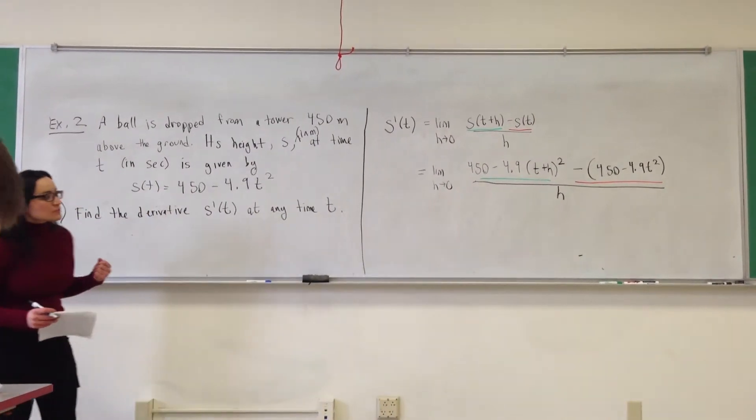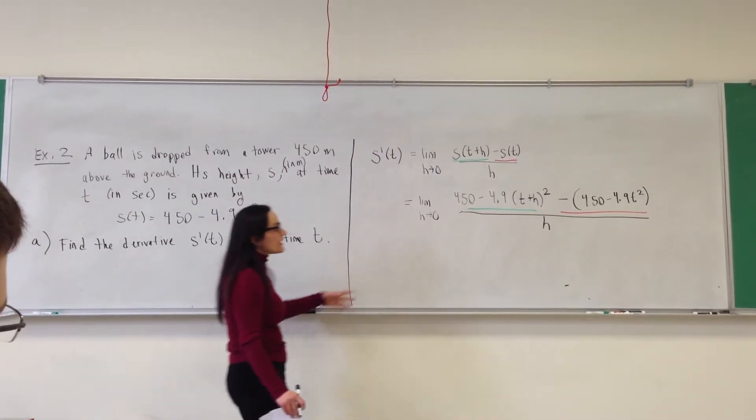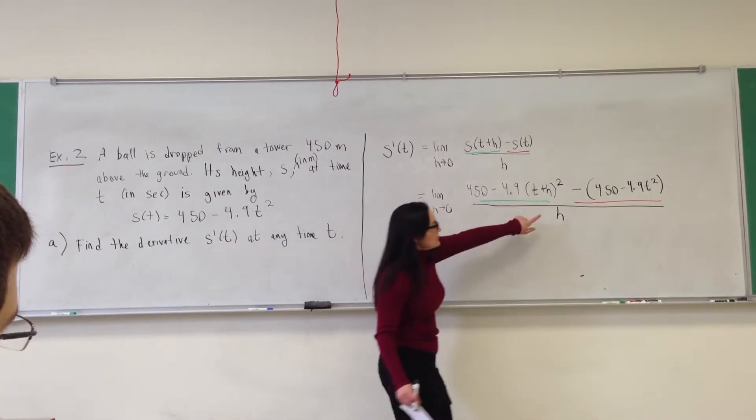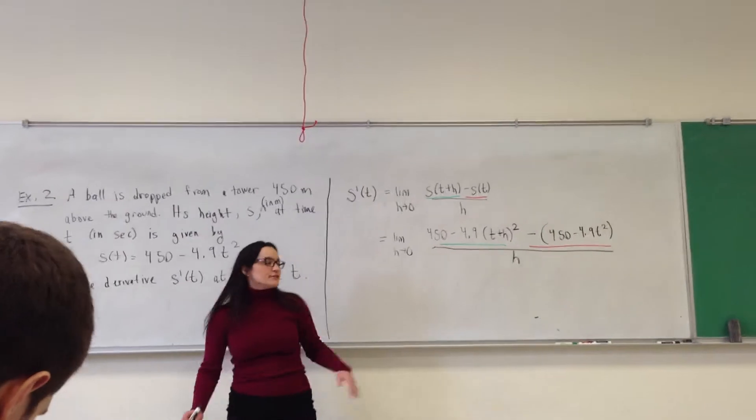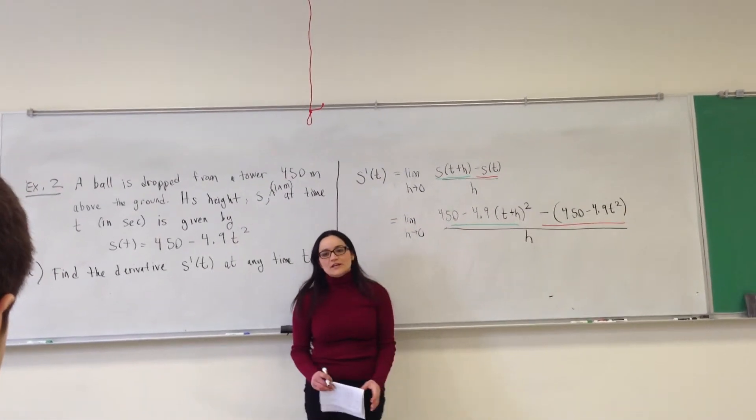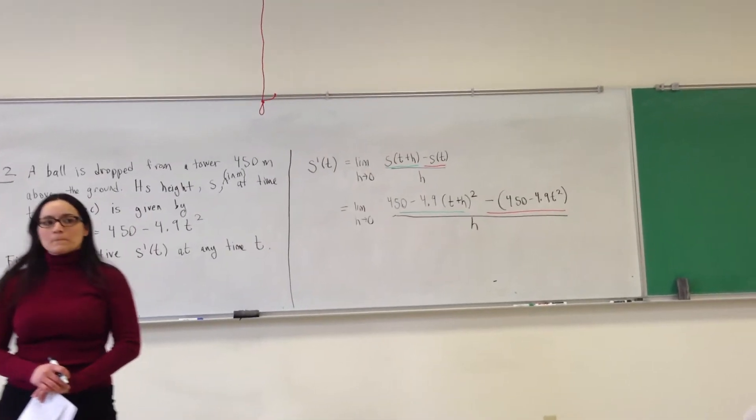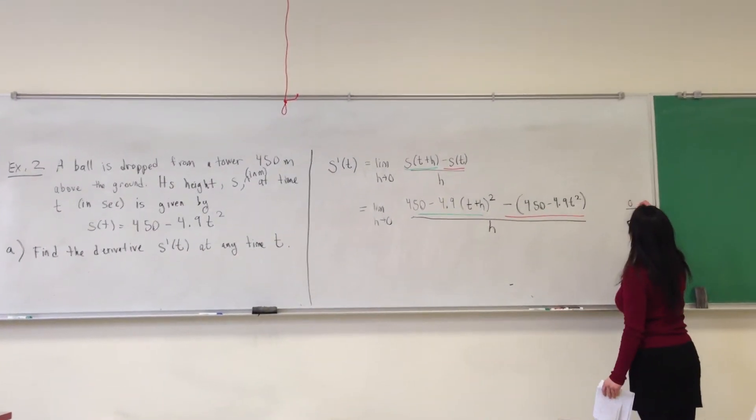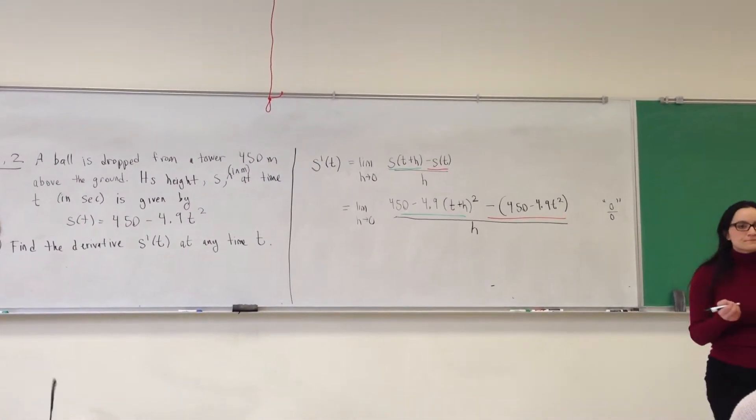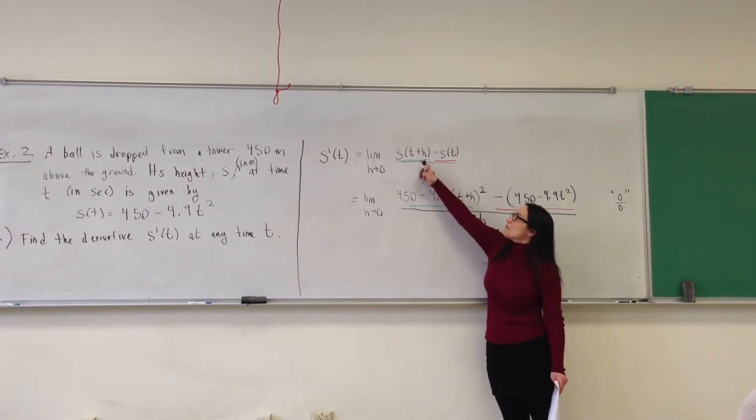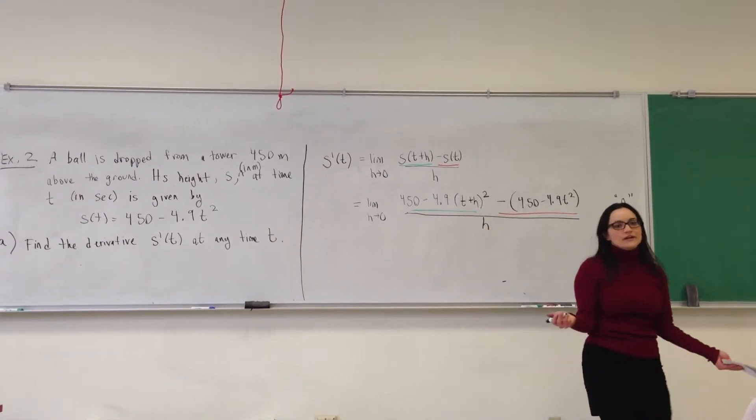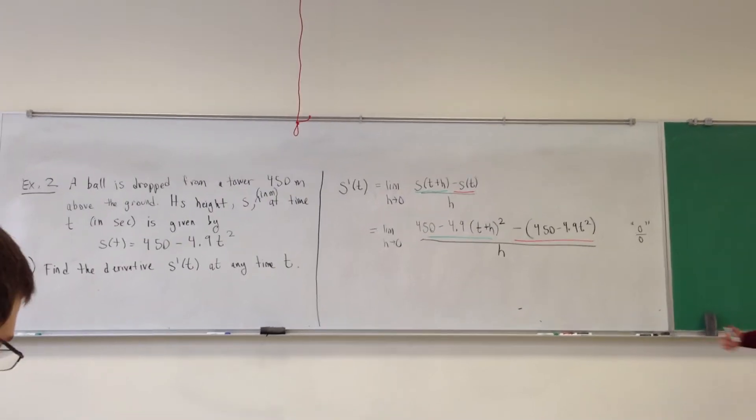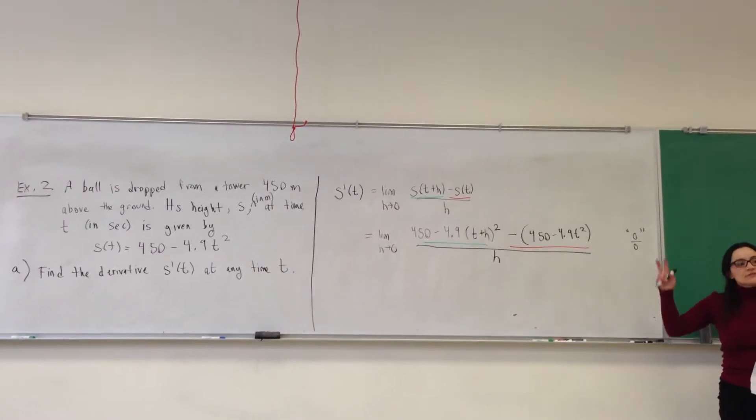So now I want to compute the limit as h approaches zero. Again, what happens when I plug in h? I get division by zero. In the denominator you get zero, what do you get in the numerator when you plug in h? Zero. You get zero also, right? When you do derivatives, you always get zero over zero. That's clear because look at the formula. Plug in h, you get s of t minus s of t over zero. So you get zero over zero.